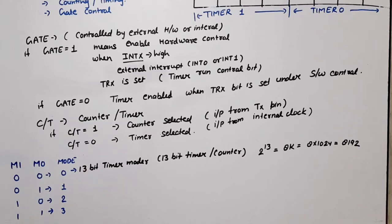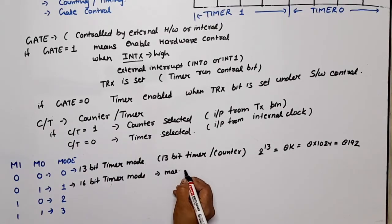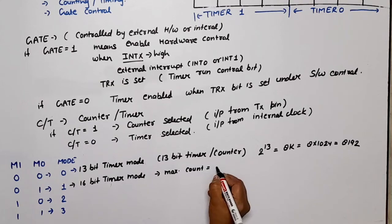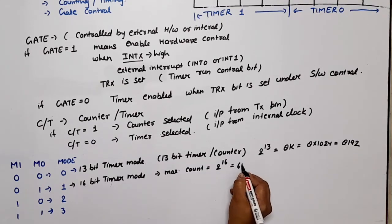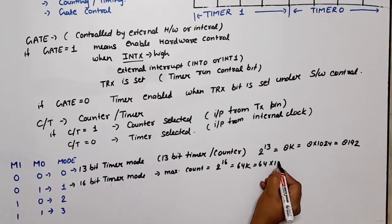When 0 1 mode is selected, it is mode 1. In mode 1, it works as 16-bit timer mode. Here whatever counter or timer will be 16-bit, so maximum count value is equal to 2 raised to power 16, which means 64K, which is 64 times 1024.